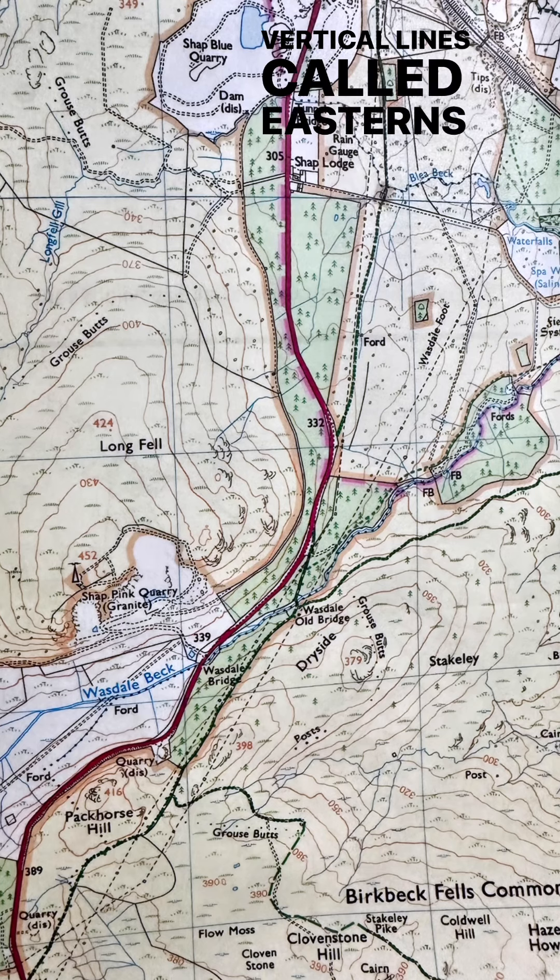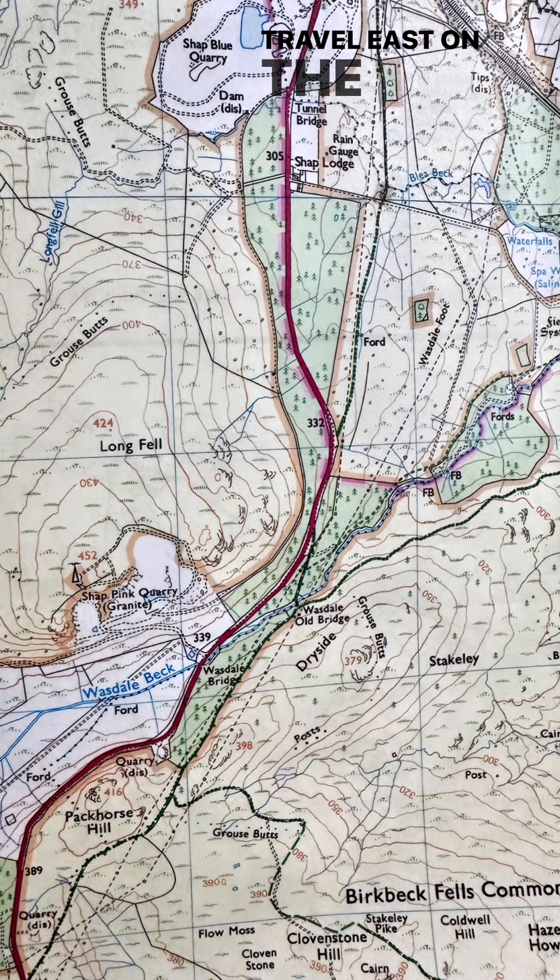The vertical lines are called eastings as they increase in value as you travel east on the map, and the horizontal lines are called northings because they increase in value as you travel north.